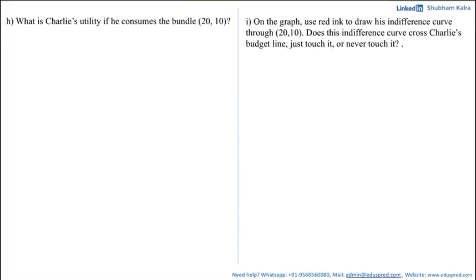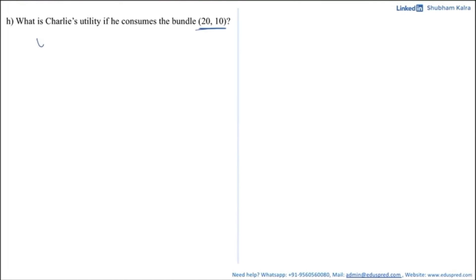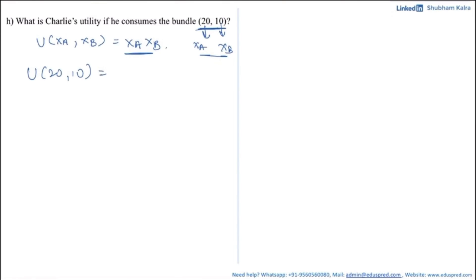The next part asks for Charlie's utility when he consumes the bundle (20, 10). Charlie's utility function is U(xa, xb) = xa × xb. Substituting xa = 20 and xb = 10 gives U(20, 10) = 20 × 10 = 200. So the utility Charlie obtains when consuming the bundle (20, 10) is 200.